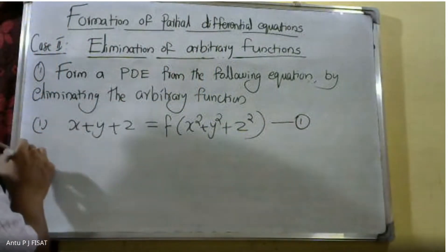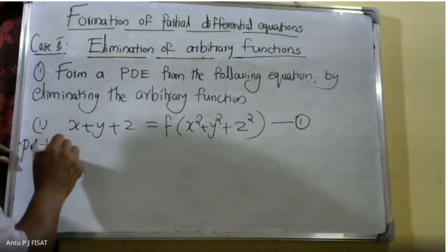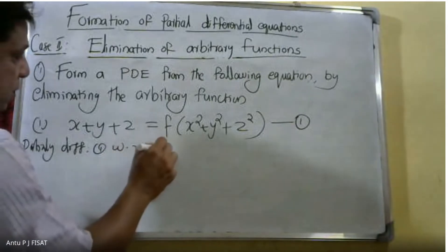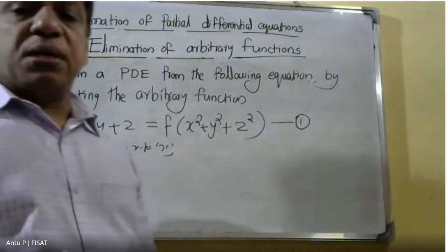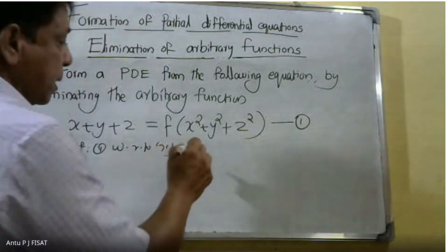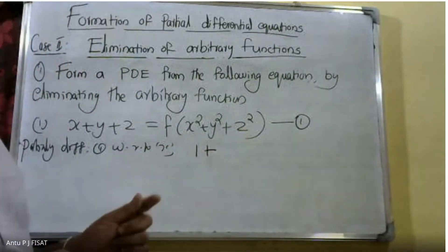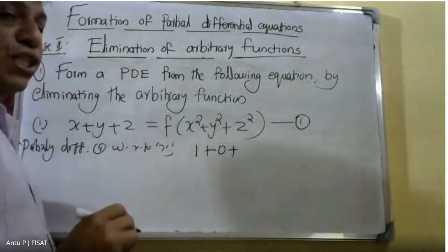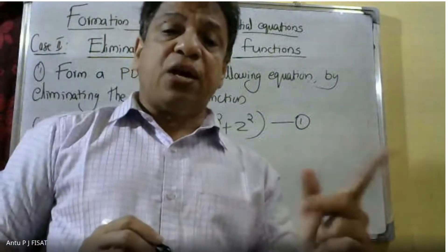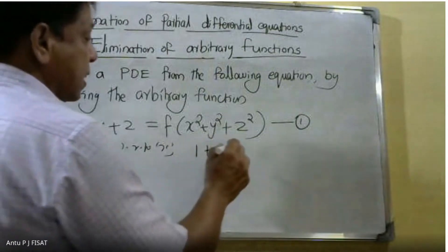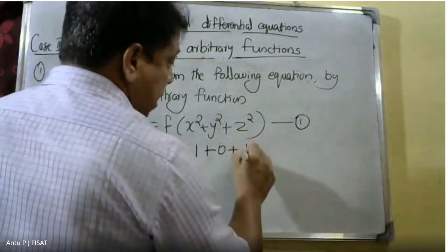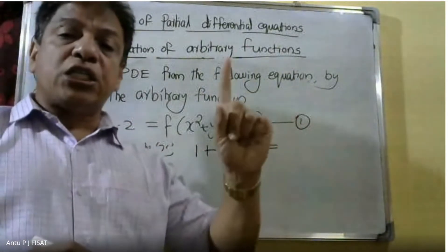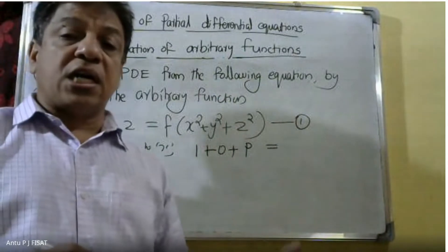We are partially differentiating equation one with respect to X. Differentiating X gives one, differentiating Y gives zero since Z is a dependent variable containing two variables X and Y. The derivative dz/dx is denoted as P.